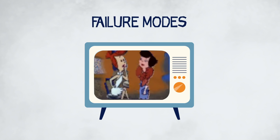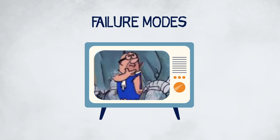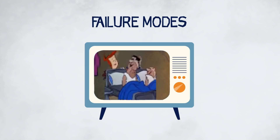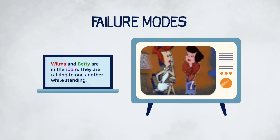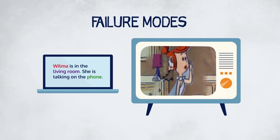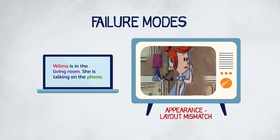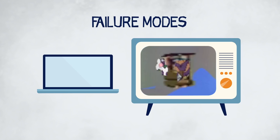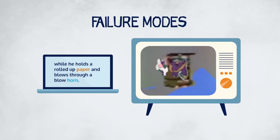All of the components of CRAFT can fail in various scenarios. In these examples, the entity and background retrievers have made selections that are inconsistent with the input description. The entity retriever can also manage to retrieve the correct character, but place them in a pose that's inconsistent with the information in the description. The ordering of entities placed in the scene can also result in an implausible appearance, in this case placing a bed on top of the characters in the scene. The layout composer and entity retriever can fail independently, in this case retrieving an instance of Wilma with her arms down, and placing a phone that is too small relative to her in the scene. Longer, more complex sentences can result in multiple failures of the layout composer and entity retriever, resulting in poor quality videos.